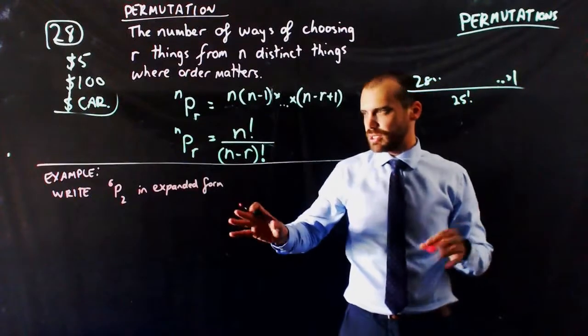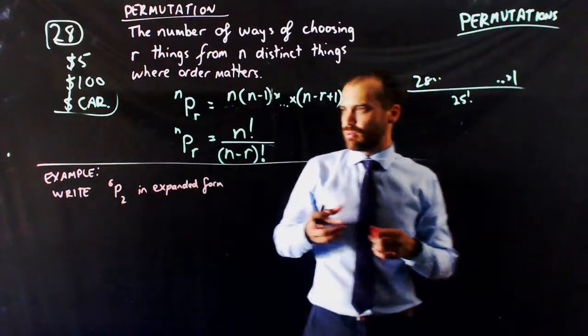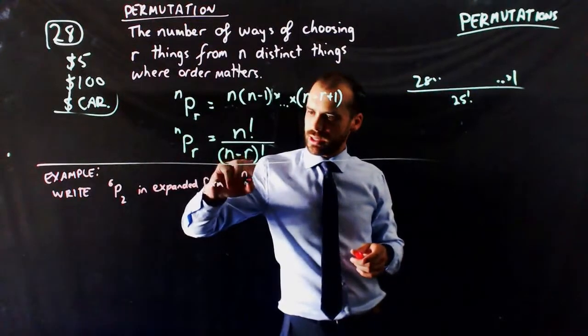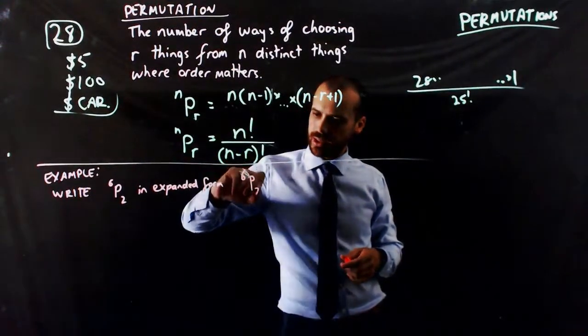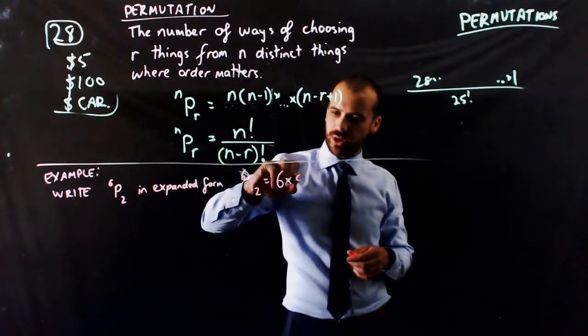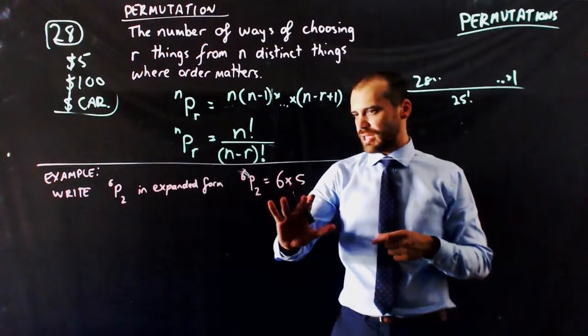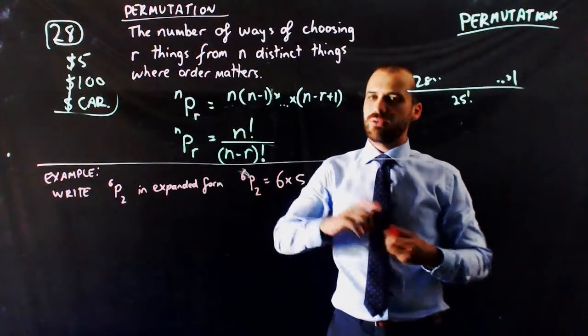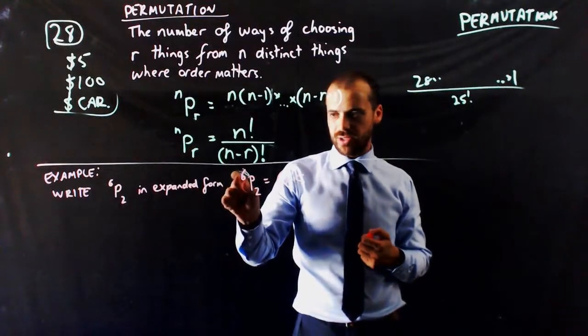Just a couple of examples here. If you are asked to write 6P2 in expanded form, what that is, let's write it, 6P2 is equal to 6 times 5. That's saying how many different ways are there of choosing two objects from six distinct things?